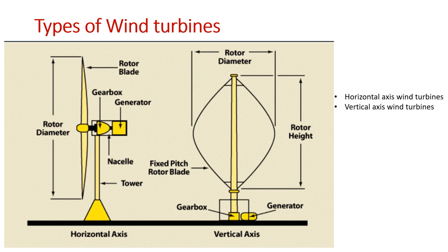There are two types of wind turbines, namely horizontal axis wind turbines and vertical axis wind turbines, as shown here in the picture. Although vertical axis wind turbines have existed for centuries, they are not as common as horizontal axis counterparts. The main reason is that they do not take advantage of the higher wind speeds at higher elevations above the ground as well as horizontal axis wind turbines.